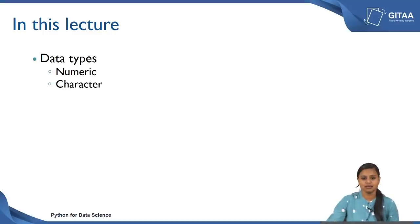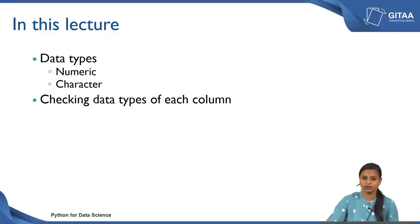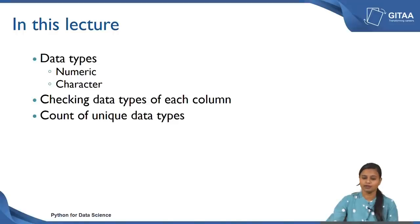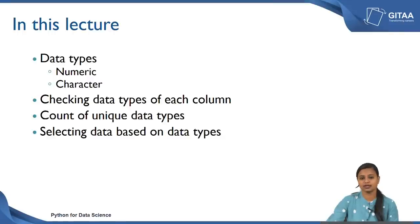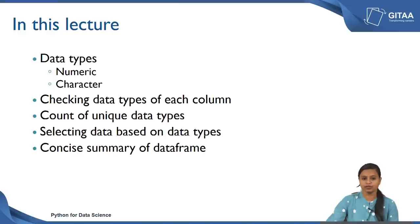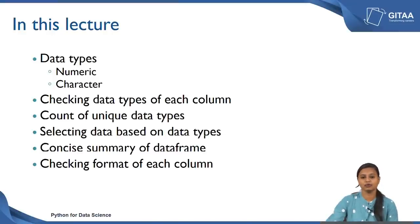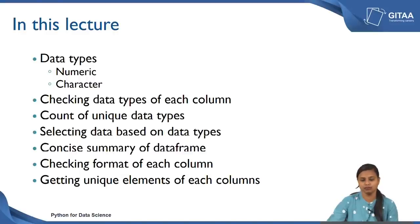In this lecture we are going to see about the data types of variables in a data frame. We are going to look at numeric data types and character data types. Once we know about the two data types, we will see how to check the data types of each column, how to get the count of unique data types, how to select data based on particular data types, and the concise summary of the data frame.